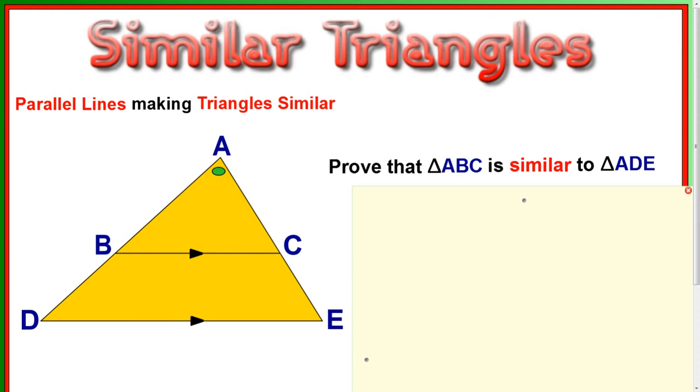Now, the way I'm going to do this is I'm going to prove that certain angles are equal to each other. So we can see that both triangles have the top bit A in them. So that's fine, but I'm going to look at ABC and ADE and show that they are the same.